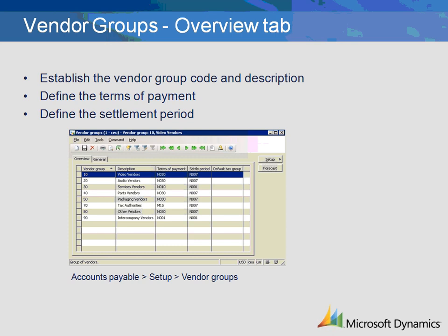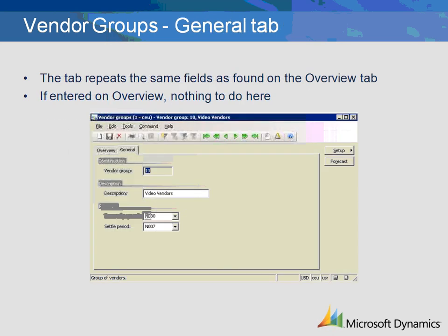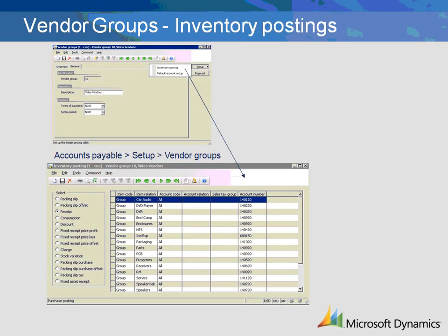Next, select the settlement period that will be applied to this vendor group. The General tab displays the same information found on the Overview, so there is nothing to complete there. Clicking the Forecast button will allow you to enter the purchase forecasting, and clicking the Setup button will launch you into the Inventory Posting form.